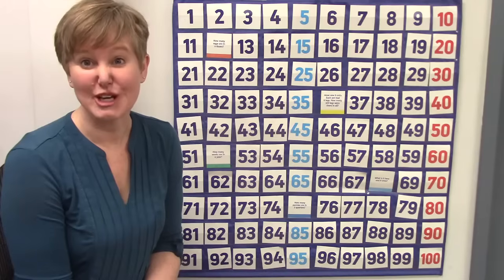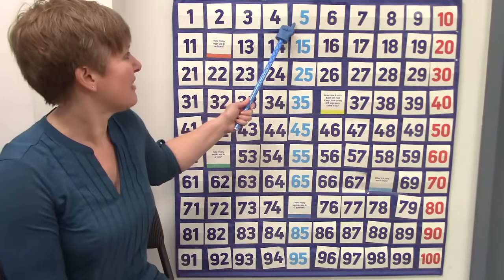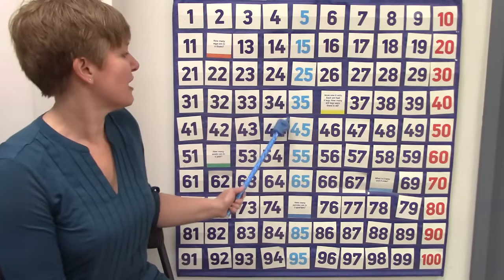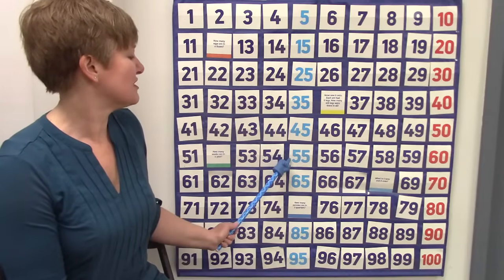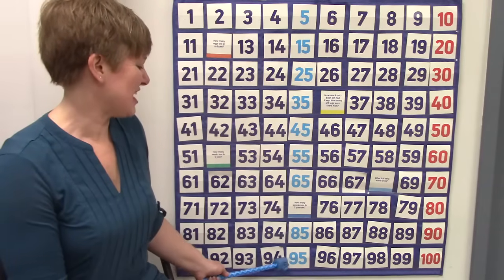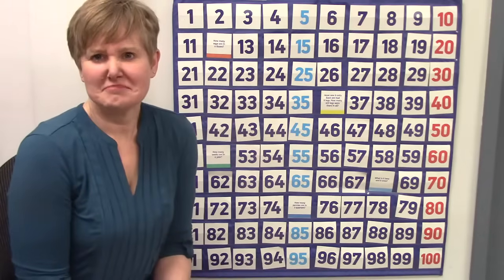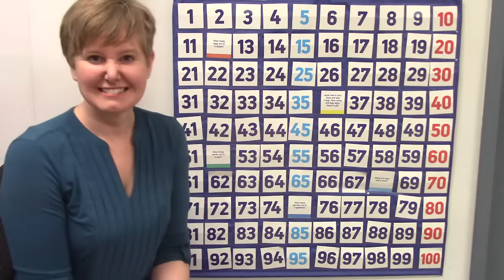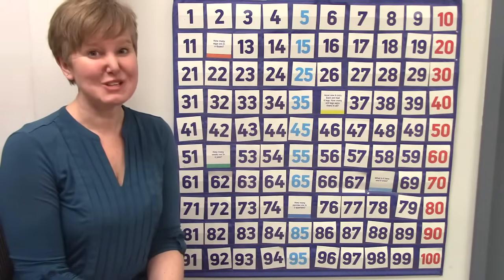Let's count by 10 starting at 5. 5, 15, 25, 35, 45, 55, 65, 75, 85, 95. What number would come next? Did you say 105? You would be right.